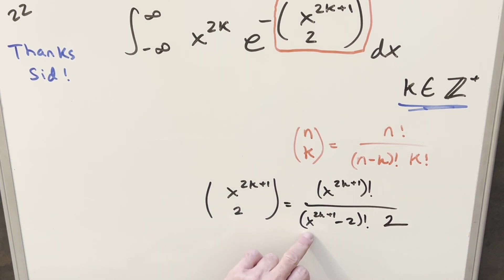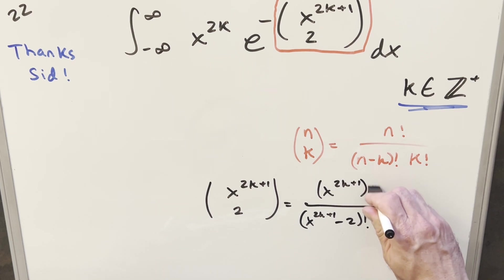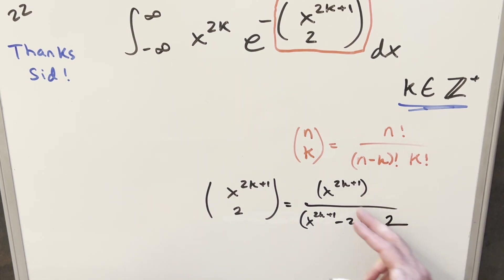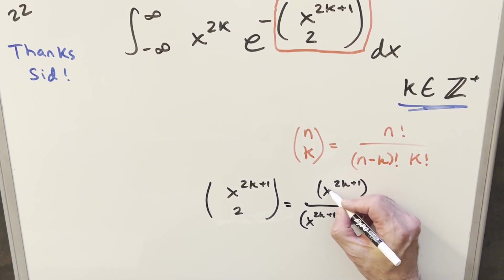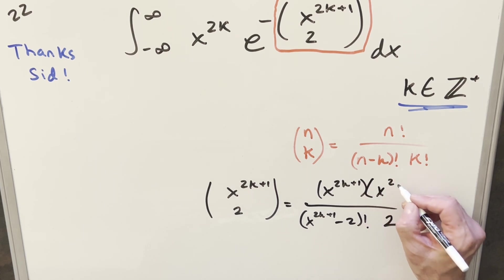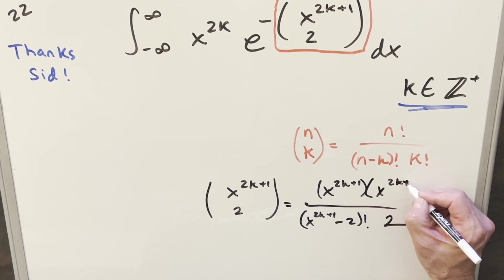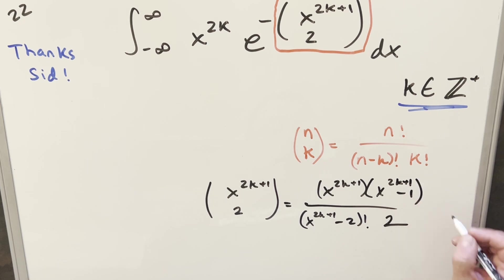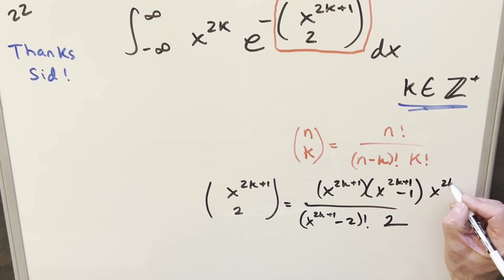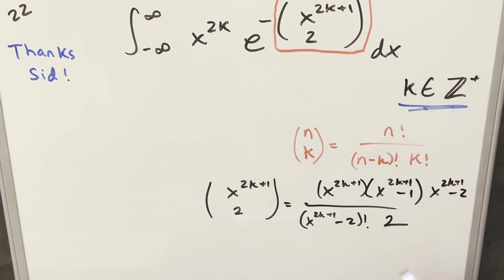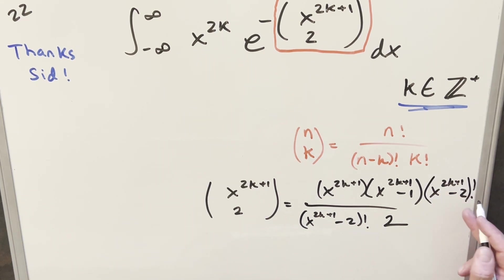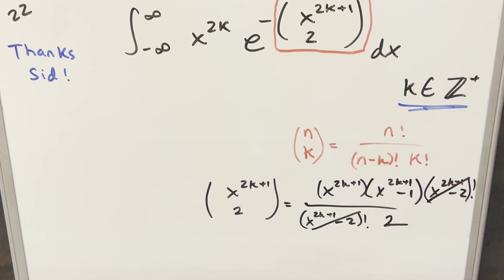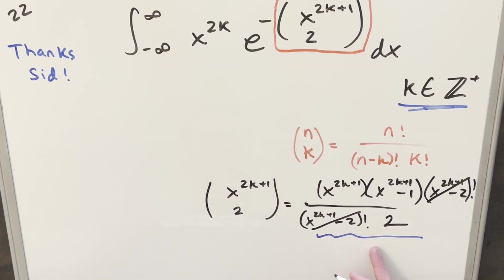What I want to do is get some cancellation, which you usually can get with factorials by expanding out some terms. So x to the 2k plus 1 factorial expands as (x^(2k+1)) times (x^(2k+1) minus 1) times (x^(2k+1) minus 2) factorial. That last factorial cancels with the denominator. Let's take what we found, clean it up, and plug it back in for the exponent.